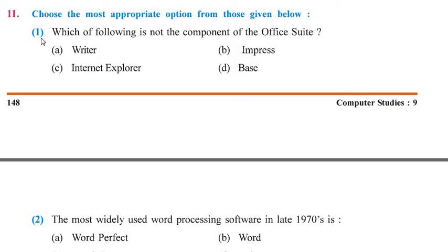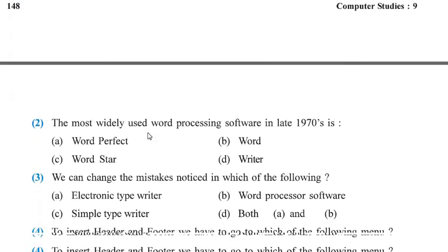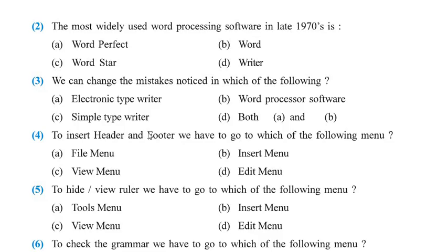Question number 1: which of the following is not a component of the office suite? Internet Explorer is the correct answer. Writer, Impress, and Base are all components of the office suite. So the answer is Internet Explorer. Question number 2: